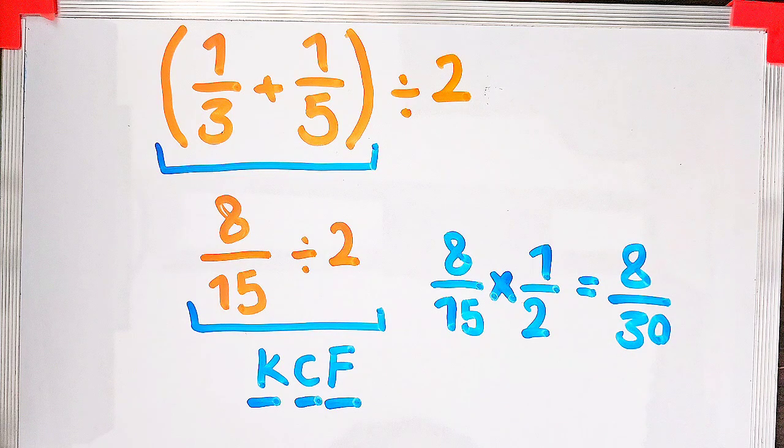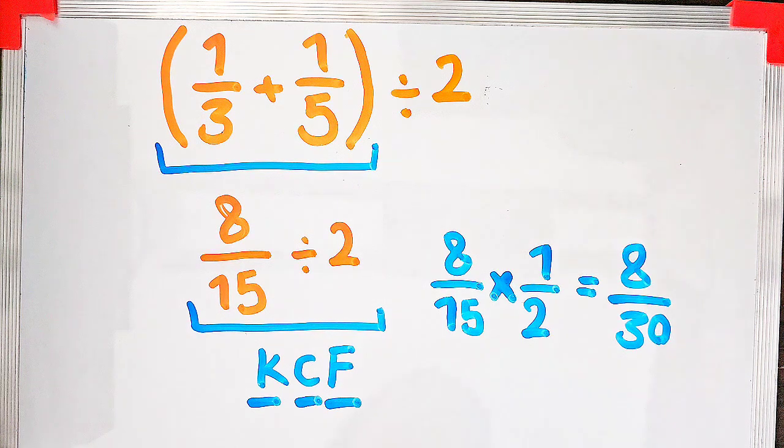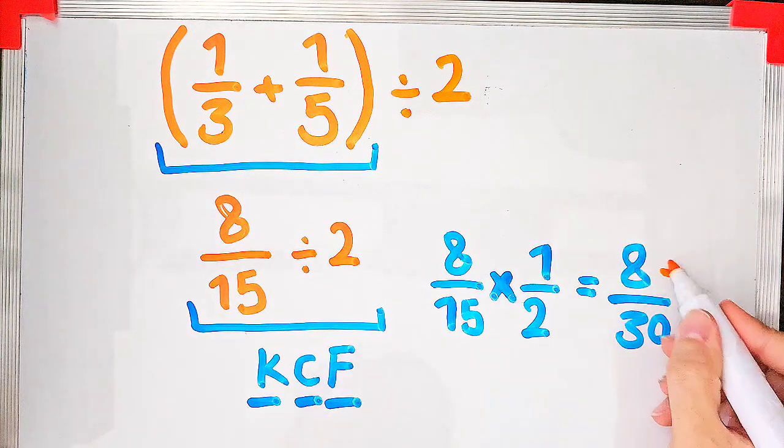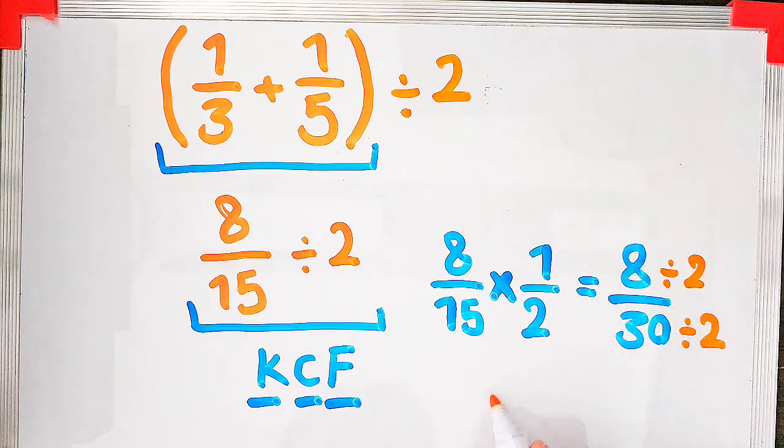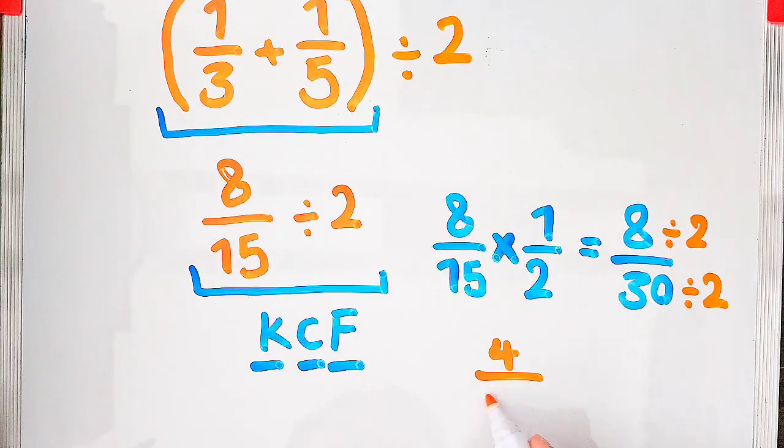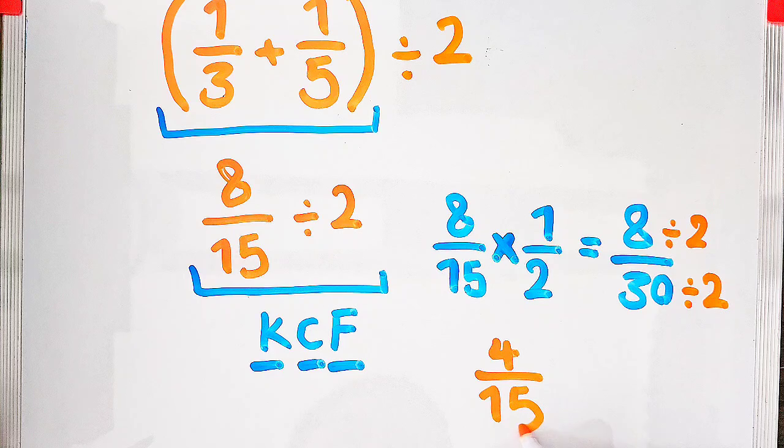As you see in the image, we simplify the question. The numerator and the denominator of this fraction are divisible by two, so we divide both by two and we get the final answer.